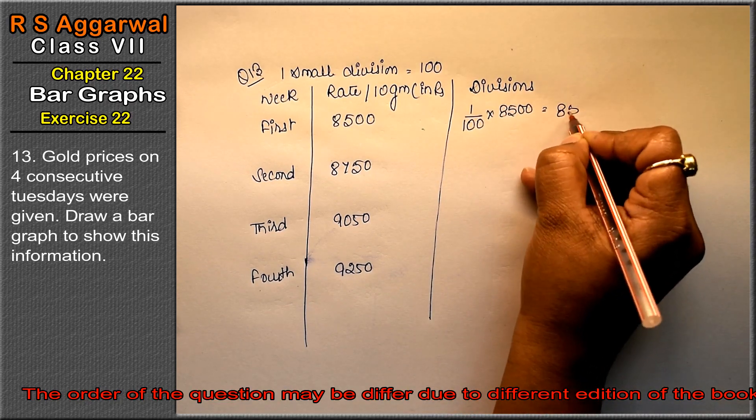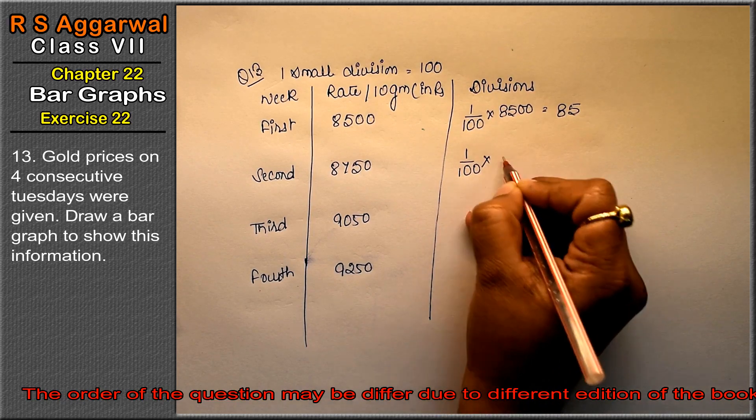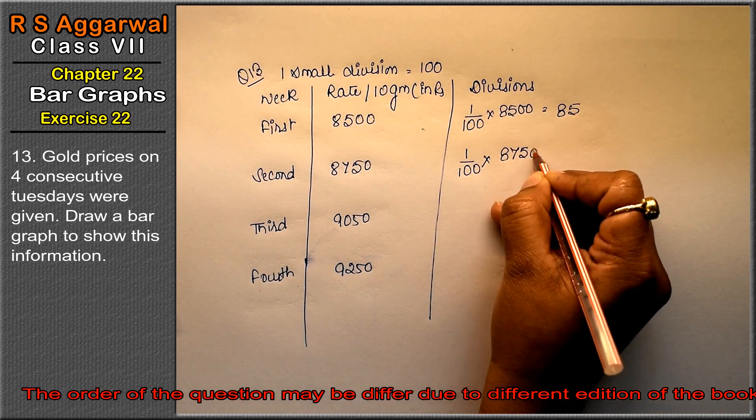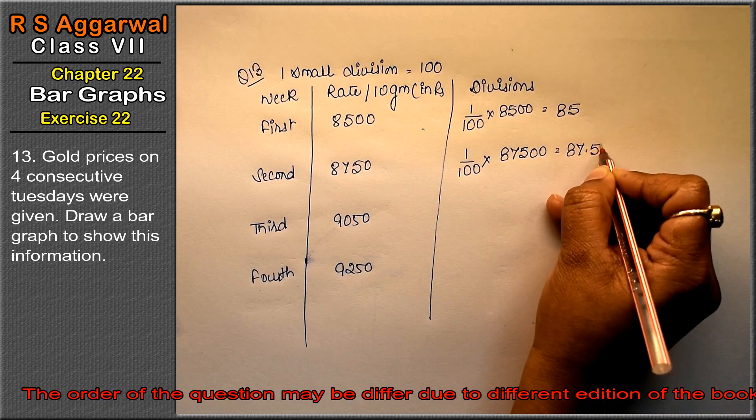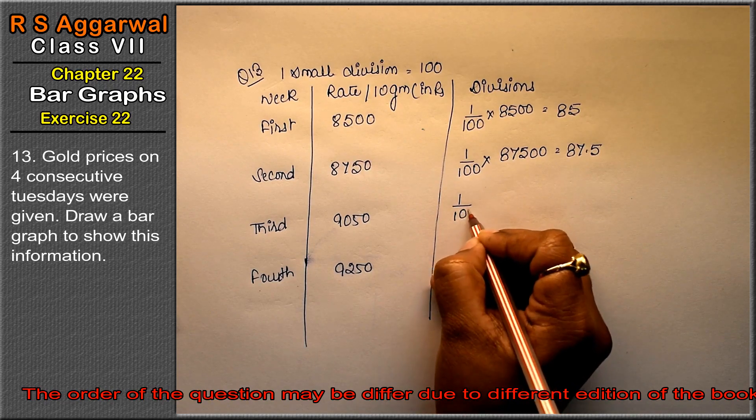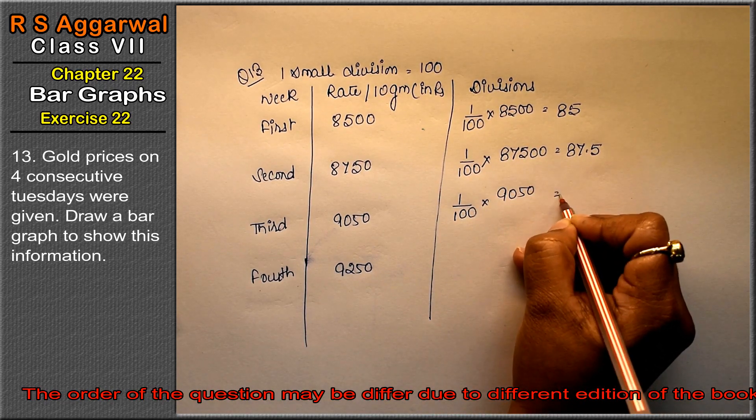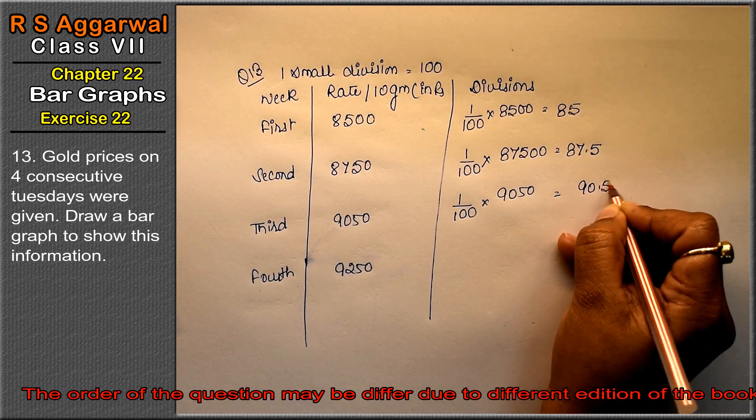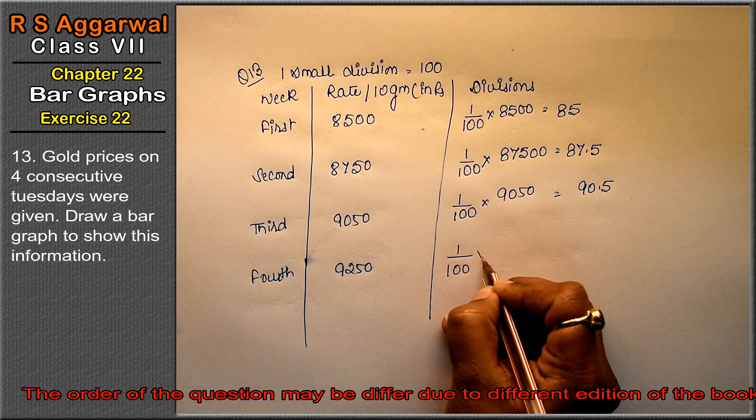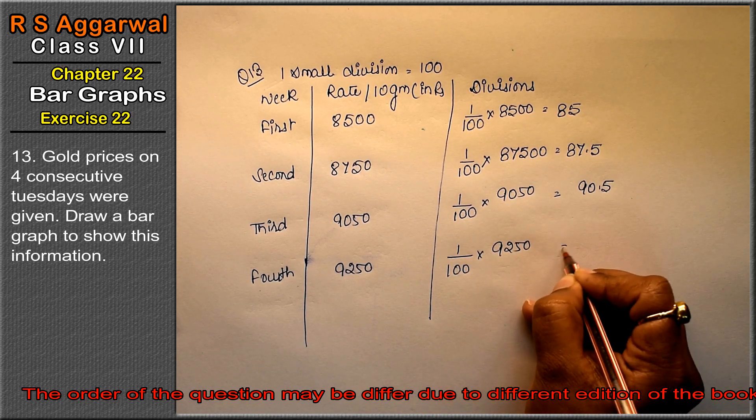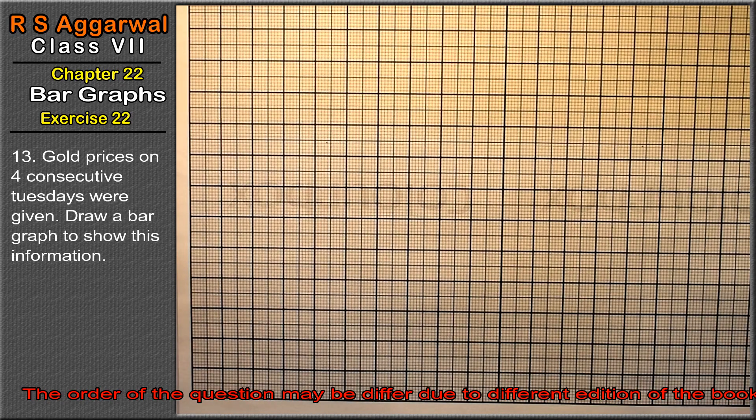1 upon 100 into 8,750, so how much is 87.5? 1 upon 100 into 9,050, so this is 90.5. 1 upon 100 into 9,250, so this is 92.5. Let's make a graph now.